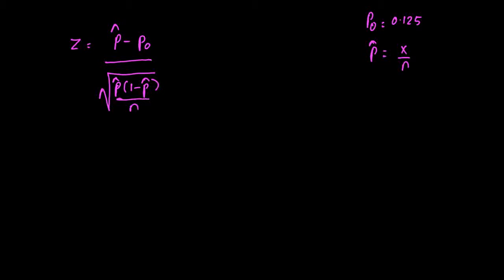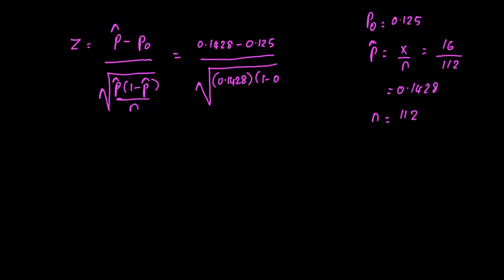Where n is the sample size and x is the number of students who smoke. Using the sample, we have 112 students and 16 out of those 112 students smoke. The value of p-hat is found to be 0.1428, and n is 112. What I have to do now is plug everything back into the expression for the test statistic.